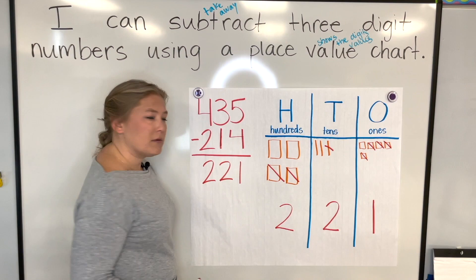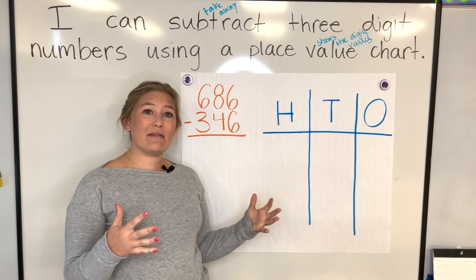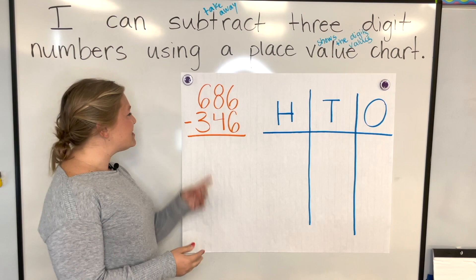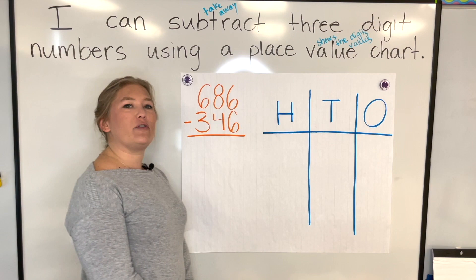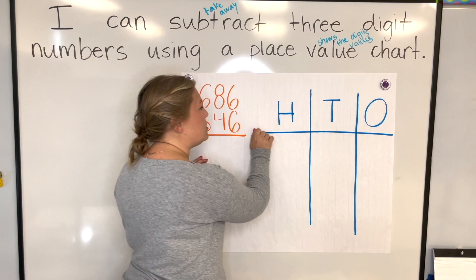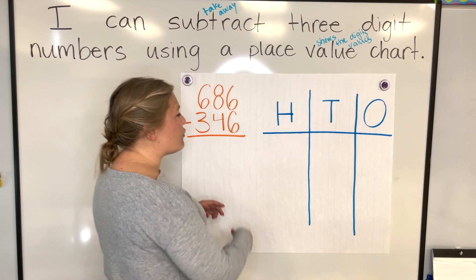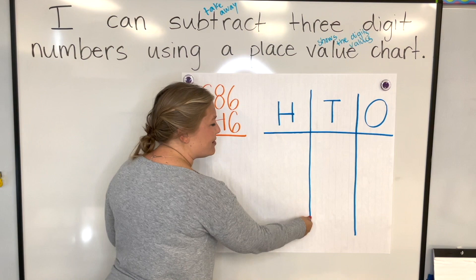Pretty easy, right? Let's try one together. Go ahead and get a piece of paper and a pencil, and we'll do the next one all together. Our problem is 686 minus 346. You want your paper to look similar to this big chart I have. When drawing your hundreds, tens, and ones chart, the best way is to draw a long line first across your paper so we don't make it too small. Then come down and draw one line, leave space, and draw another line. That's it — just three lines. Then put H for hundreds, T for tens, and O for ones.